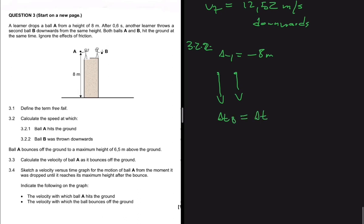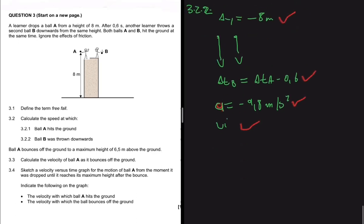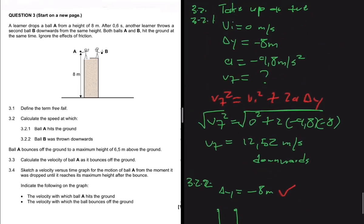Since both balls hit the ground at the same time, Δt for ball B equals Δt for ball A minus 0.6 seconds. We can find Δt for ball B by first calculating Δt for ball A. So far for ball B we have the displacement, the time we can calculate, and the acceleration, which is always minus 9.8 meters per second squared. We are looking for vi.